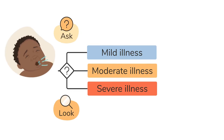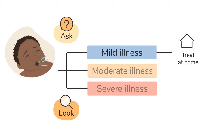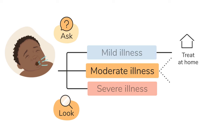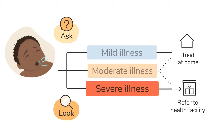After doing all this, you should have enough information to decide if the cough is a sign of a mild, moderate, or severe illness. If it indicates a mild illness, you can help the caregiver treat the child at home. If it indicates a moderate illness, you will decide whether the symptoms can be treated at home or if the child needs to be referred. However, if it indicates a severe illness, you should refer the child urgently to a health facility. This will be explained in more detail in another video.